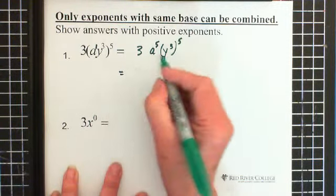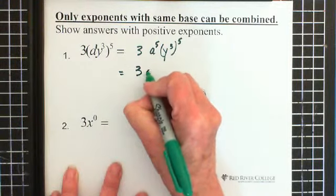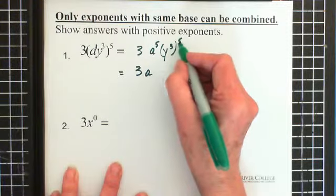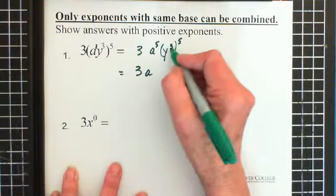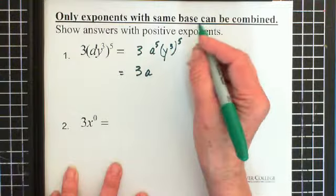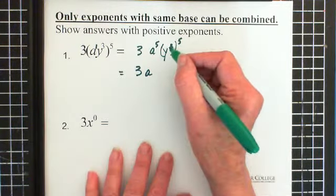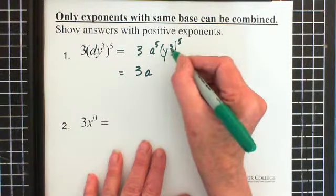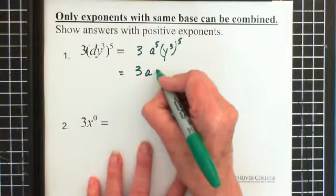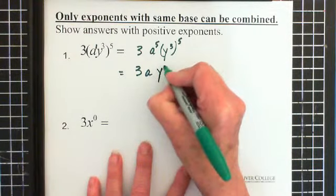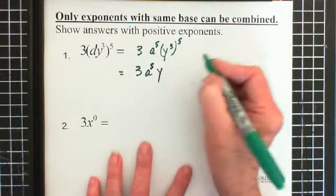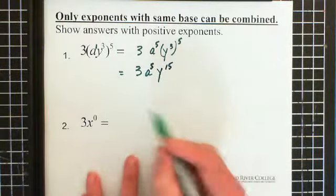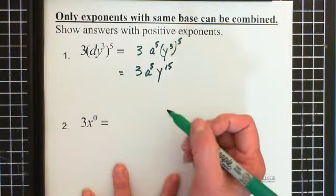Now let's just rewrite this so we have 3a. Now again this is y cubed raised to the power of 5 and what we do is we take the 5 and multiply it by 3. And if you can't remember why, go back to the videos that explain the basics of exponents. So the 3 is multiplied by the 5 and we have y, oops sorry, almost forgot our 5 here. This is y to the 15. And that's our final answer. 3a to the 5th, y to the 15th.